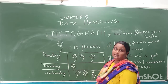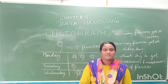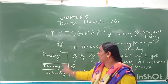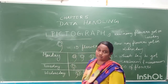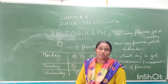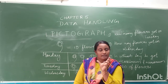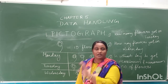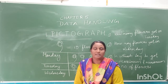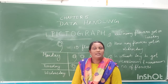Ten plus ten plus ten equals thirty flowers collected on Monday. This is how we represent data in the form of pictures and tables — that graph is known as a pictograph. It is represented by pictures and there may be some scale. Sometimes one picture of a car or pen equals ten, five hundred, or any value. If no scale is given, we simply count the number of pictures.